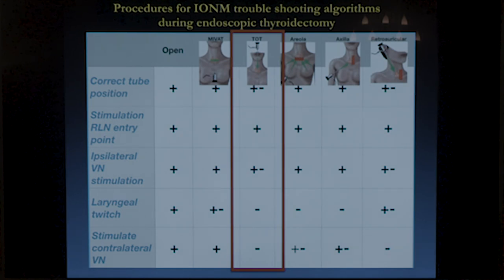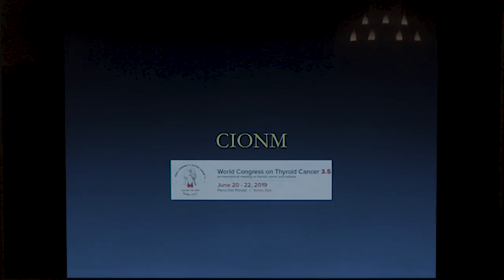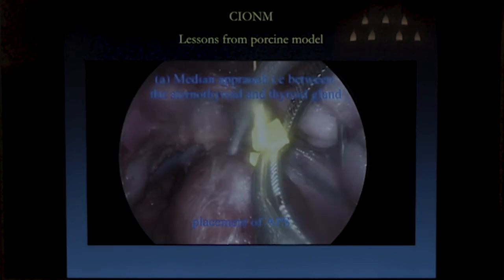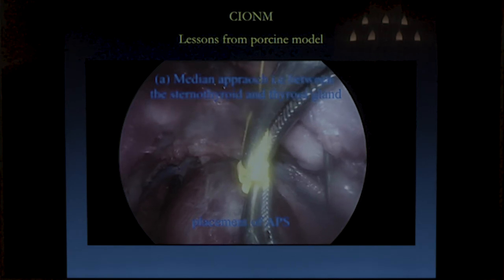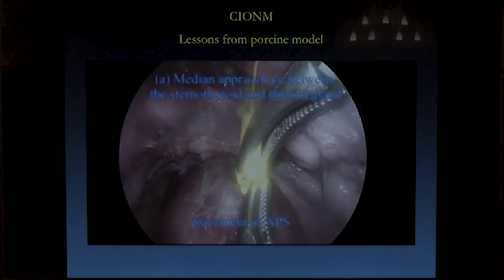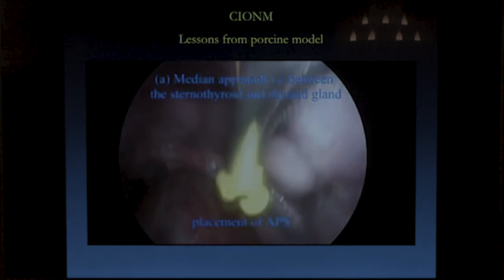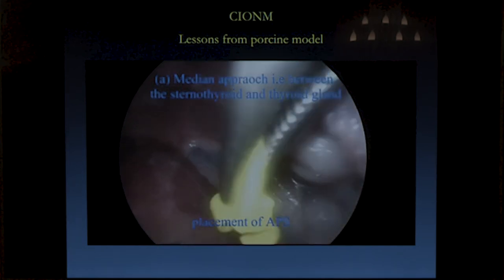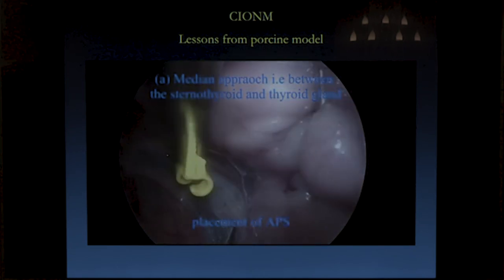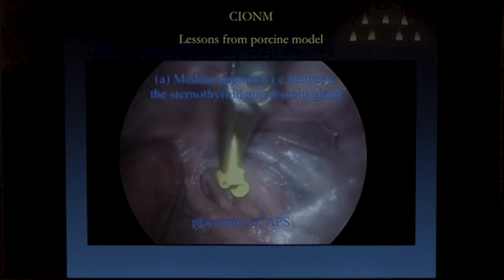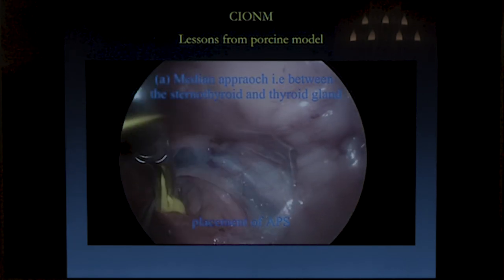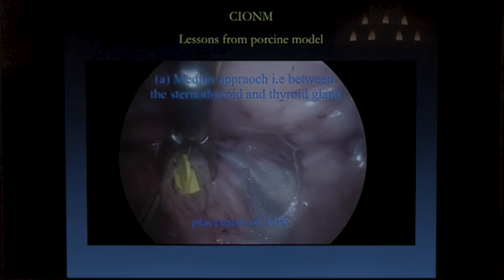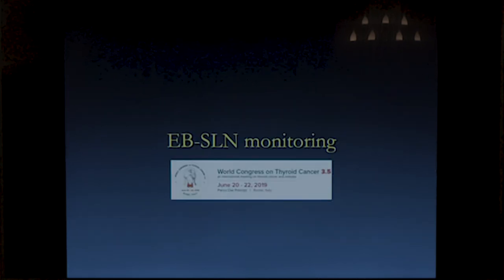The algorithms used in open surgery for solving monitoring problems cannot be fully applied in endoscopic procedure. Regarding continuous monitoring in transoral endoscopic procedure — it took us 45 minutes to place the probe on the vagal nerve of a pig, which was too much time. We definitely need something simpler for use in endoscopic procedure.